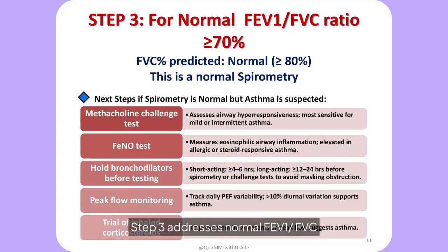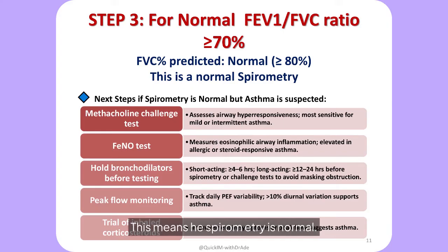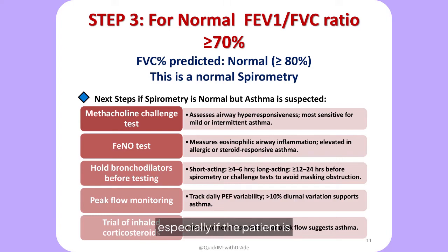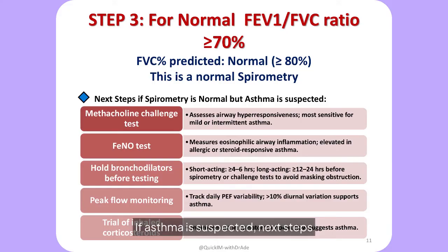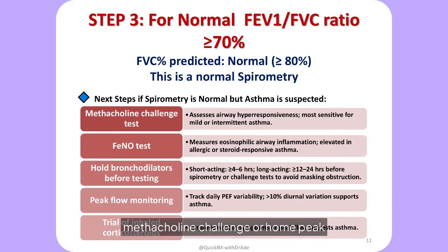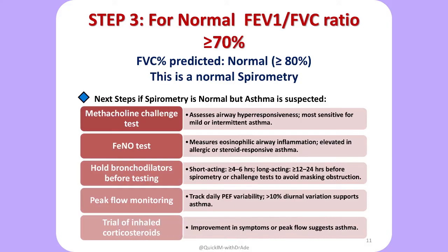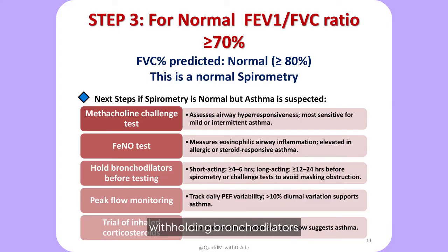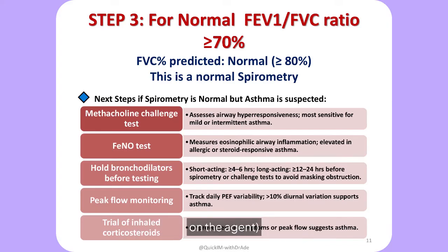Step three addresses a normal FEV1/FVC ratio with normal FVC — spirometry is normal. However, normal spirometry doesn't rule out asthma, especially if the patient is asymptomatic during testing. If asthma is suspected, next steps such as bronchoprovocation testing like methacholine challenge or home peak flow monitoring are appropriate. Clinicians should also consider repeating spirometry after withholding bronchodilators for six to 24 hours, depending on the agent, to increase the chance of detecting reversible obstruction.